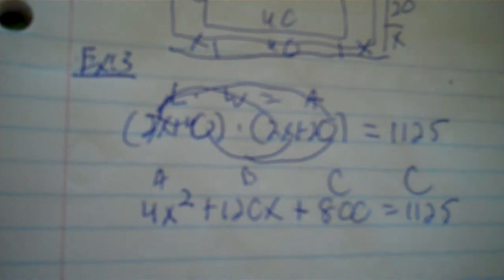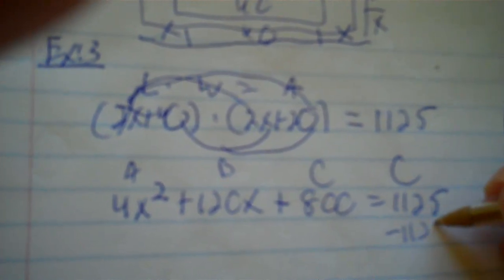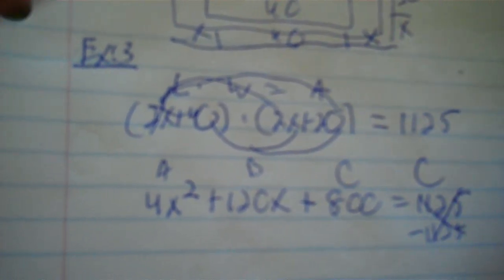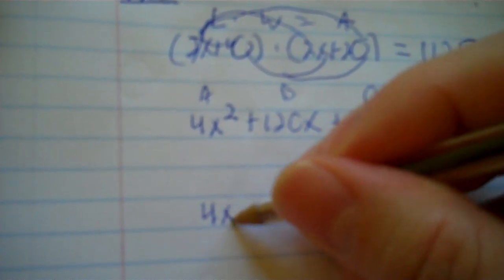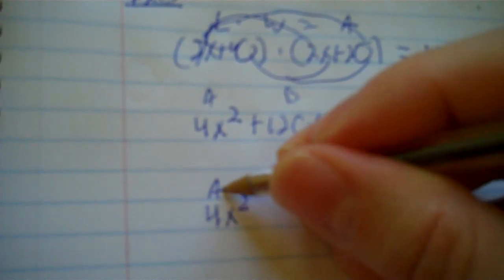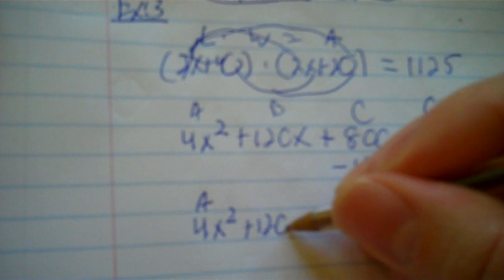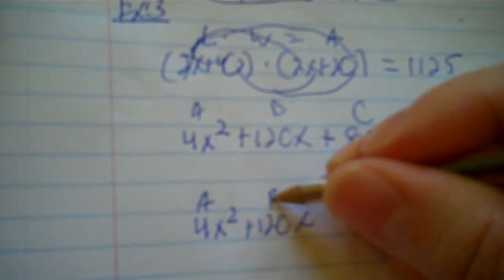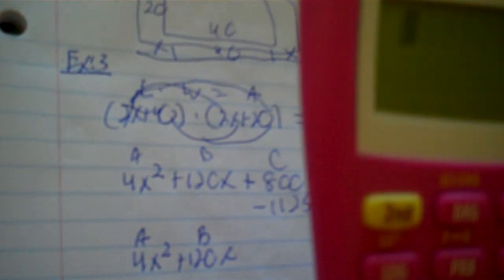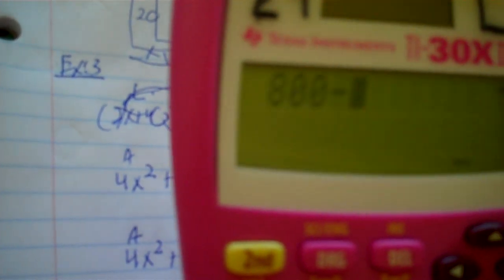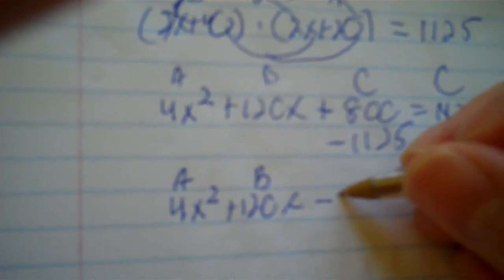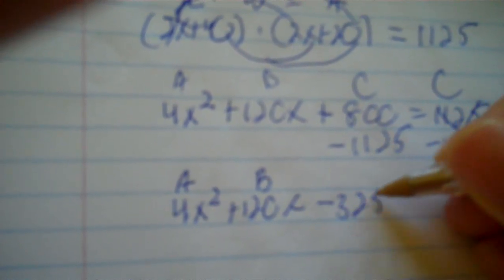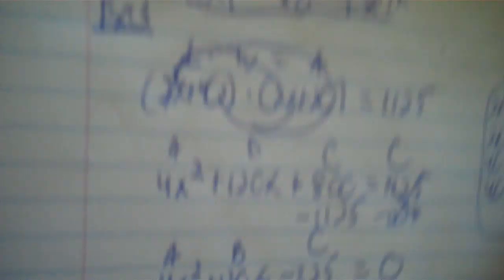That's A, that's B, and then you've got two C's. When you have two C's — A, B, and C — you have to move everything to one side. So I've got 4x squared, that's A, plus 120x, that's B, and 800 minus 1,125 is negative 325, so that's C, equals zero.